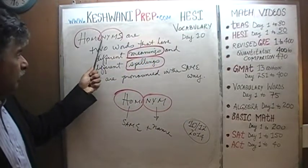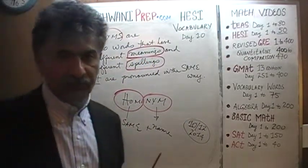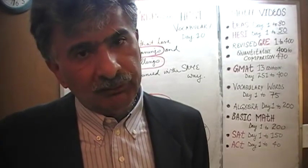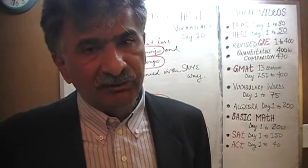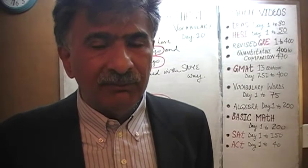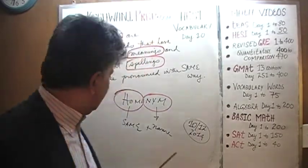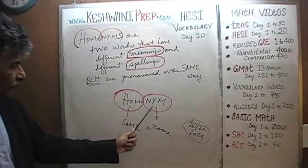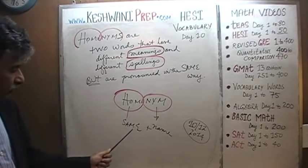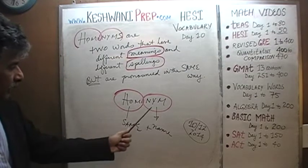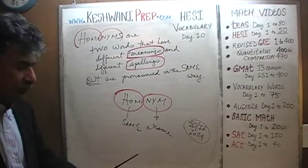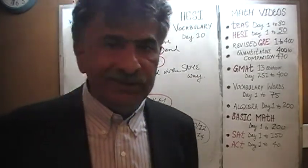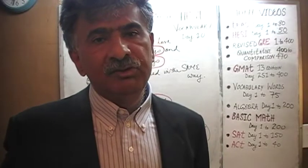Homonyms — first of all, what does the word homonym literally mean? Let's dissect the word, let's break it up and see what it actually means. Homonym, as you can see, is made up of two parts: a prefix and a suffix. The prefix 'homo,' as you know, simply means 'same.' And the suffix 'nym' comes from a Latin word which means 'name.' So homonym literally means 'same name.'